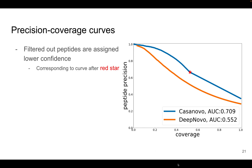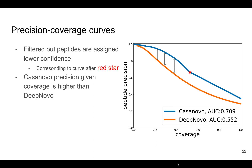To show a sample precision-coverage curve, we compare Casanova with DeepNovo on the same test set. For the Casanova curve, note that the filtered-out peptides using the simple m/z filter are assigned a lower confidence, so all of them are clustered at the terminal end of this curve. The red star on the plot represents the division between plausible predictions and implausible predictions which are filtered out. As you can see, Casanova achieves higher precision for given coverage values compared to DeepNovo, and at the terminal end of the curves where coverage goes to one, Casanova still performs better.